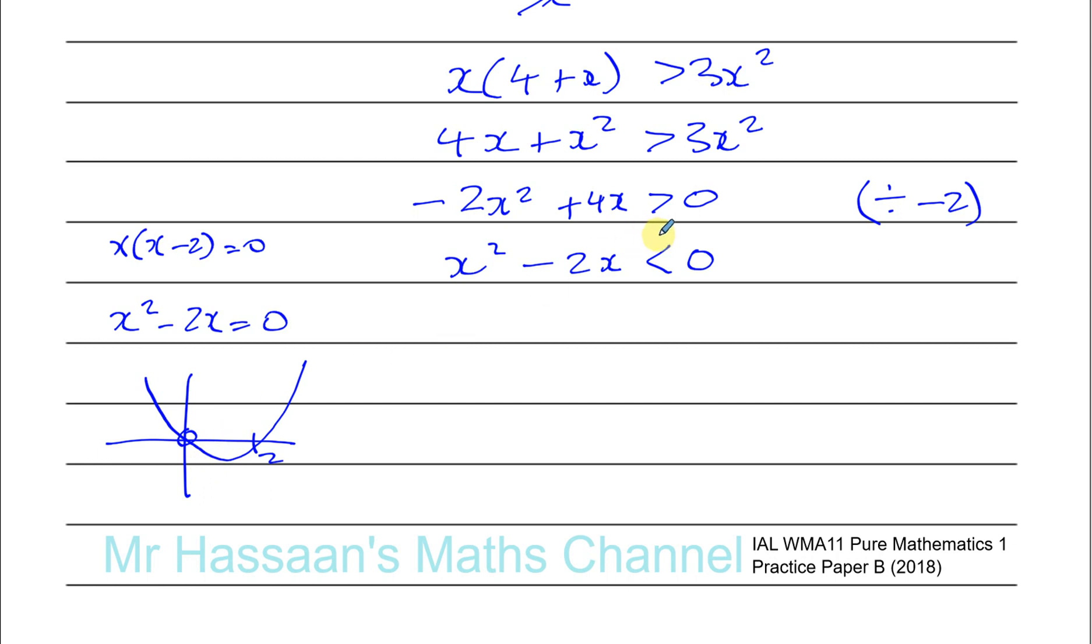We want to find when this is less than 0. So we can see that this is less than 0 when it's below the x-axis. All these values here will give us a value where this curve is less than 0, where it's going to be somewhere on the negative side of the y-axis. So we can see that that's between the values of x being 0 and being 2. When x is between 0 and 2, this thing will be negative, x squared minus 2x is less than 0.